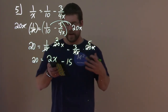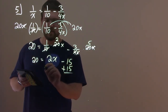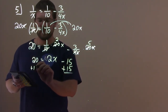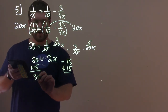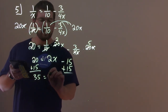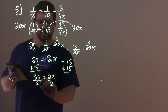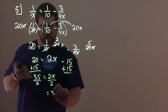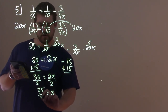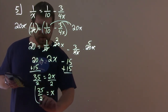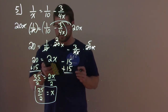We want to get x by itself, so we add 15 to both sides. 20 plus 15 is 35. Bring down the 2x. Divide both sides by 2, and x equals 35 over 2.